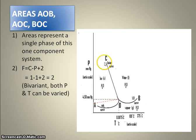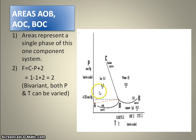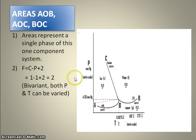Now we come to the areas — all three areas: AOC, BOC, and AOB. The number of components is 1, and the number of phases covered in each area is also 1. Therefore, we get the degree of freedom equal to 2, meaning both variables can be changed.